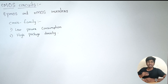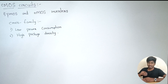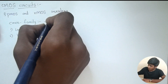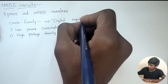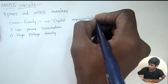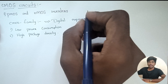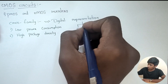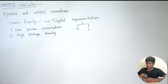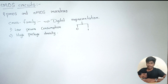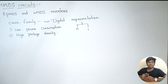Power consumed by CMOS circuits is very less. CMOS circuits are used for digital representation. We use CMOS for digital representation. What is digital representation? It takes the values 0 or 1, because any system or circuit can be represented using zeros and ones — we call it digital representation. Before going to CMOS construction, we first look at PMOS and NMOS.